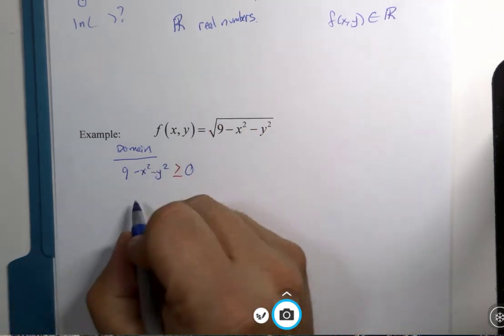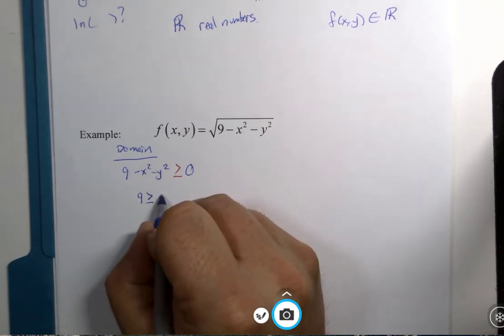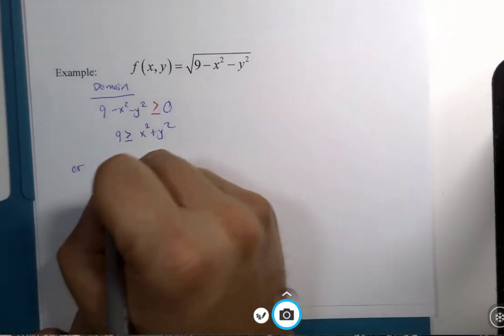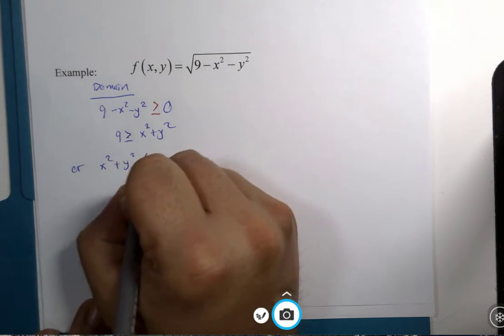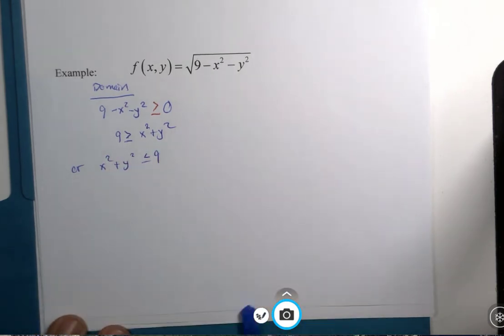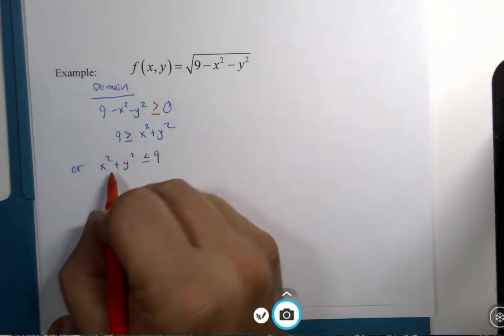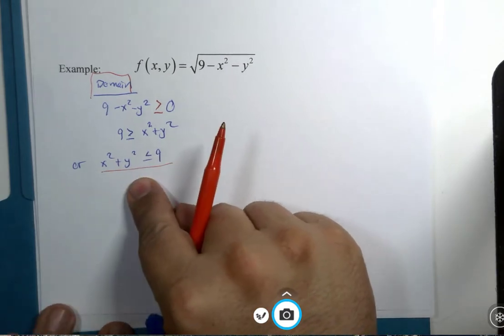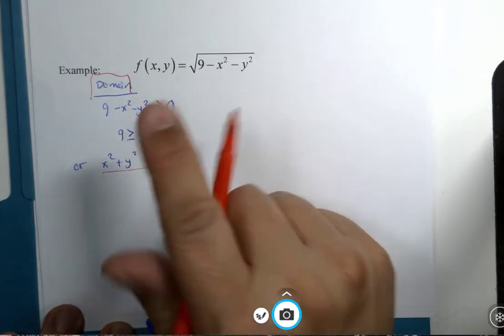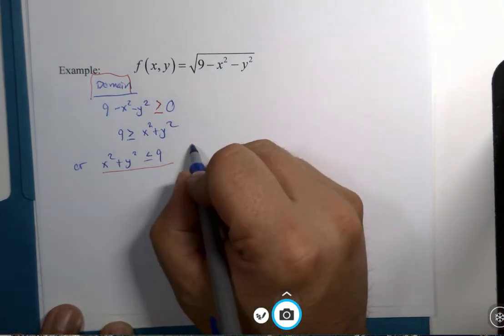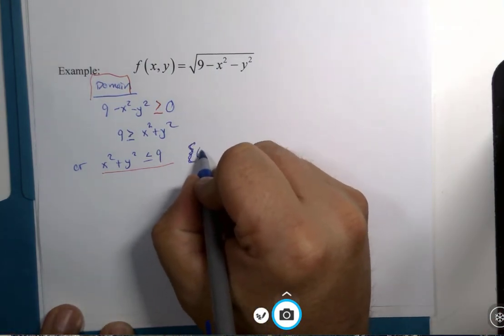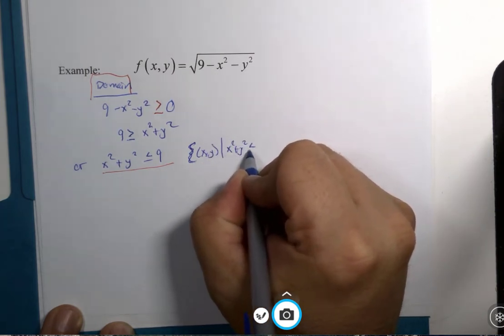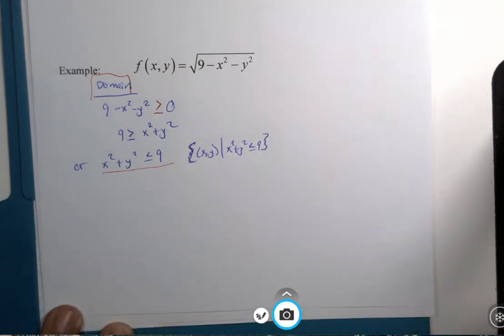Now, what is this? 9 is greater than or equal to x squared plus y squared. Or, x squared plus y squared is less than or equal to 9. You could actually say this is the domain. All of the x and y values such that x squared plus y squared is less than or equal to 9. You literally could write this down.